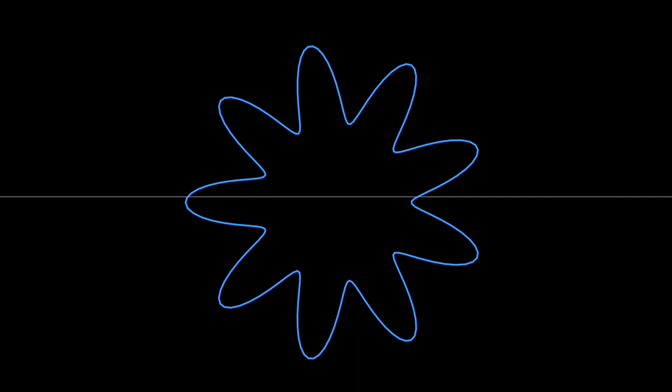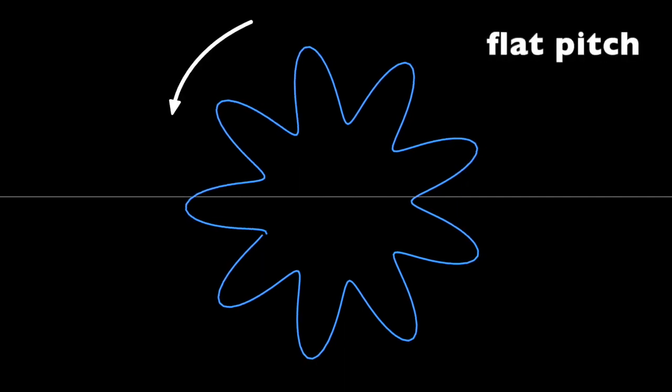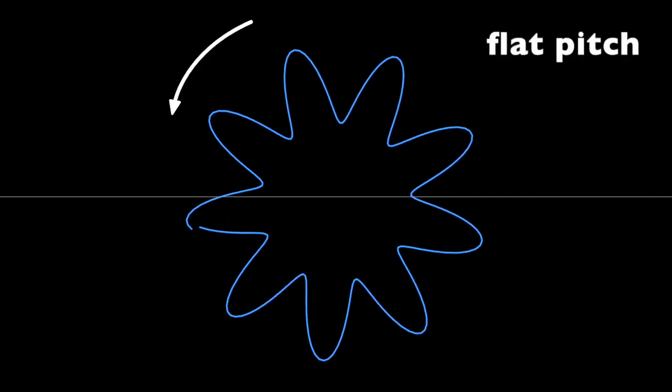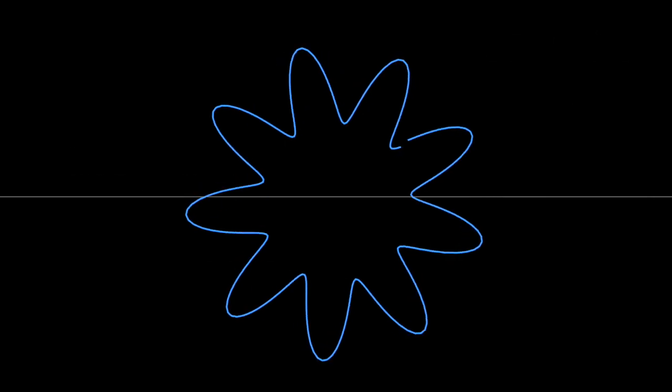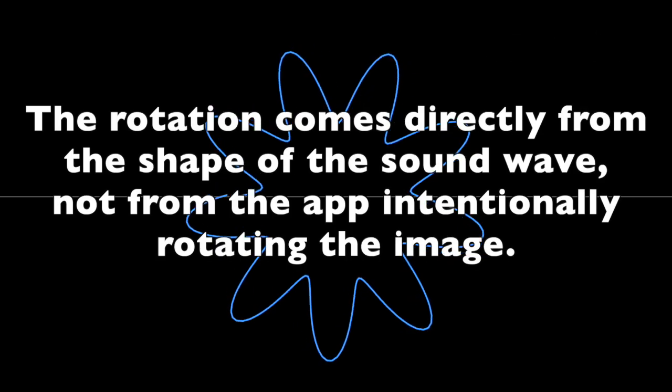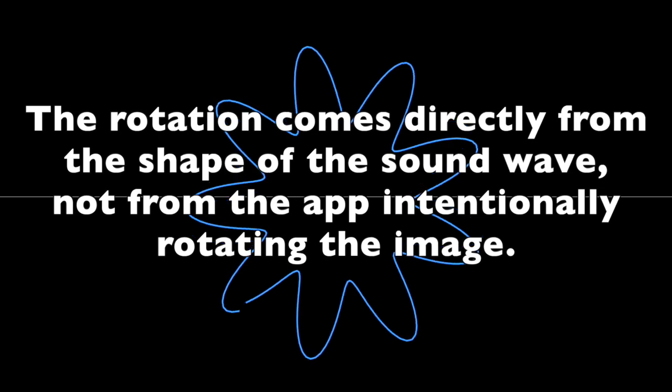When the sound is flat, the graph appears to rotate counterclockwise. HelixTuner does not need to detect the pitch to make this rotation happen. It just happens on its own, because the wavelength of the sound doesn't match up with the circumference of the circle.